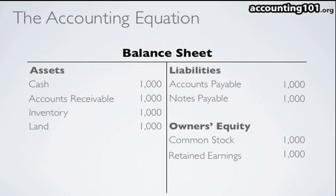As you can see, on the left side of the balance sheet you have the assets, and on the right side you have the liabilities and the owner's equity. The assets total $4,000 on the left side. On the right side, the liabilities equal $2,000 and the owner's equity also equals $2,000, so liabilities plus owner's equity also equals $4,000. That's why the balance sheet is called the balance sheet — the left side will always equal the right side. So again, the accounting equation is assets equals liabilities plus owner's equity.